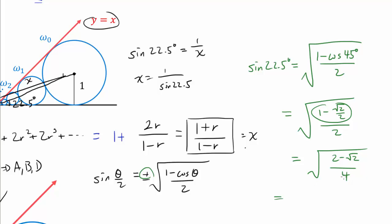Combining these two, and we can take one half out to get one half times square root of 2 minus square root of 2.